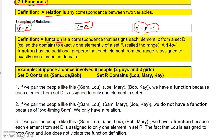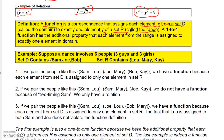We'll find that y = x² is a function but x² + y² = 9 is not. The definition of a function says it is a correspondence that assigns each element x from a set D — called the domain — to exactly one element y of a set R — called the range. Each element from the domain can only be assigned to one element from the range.